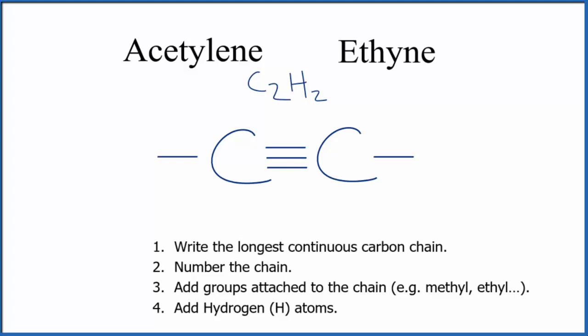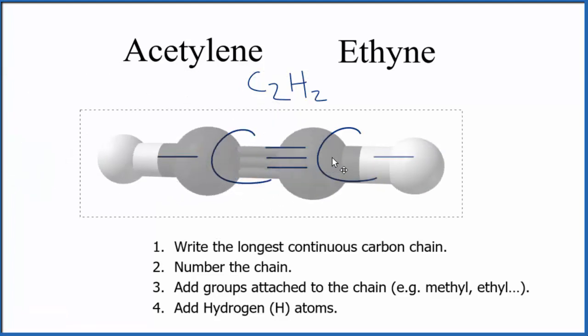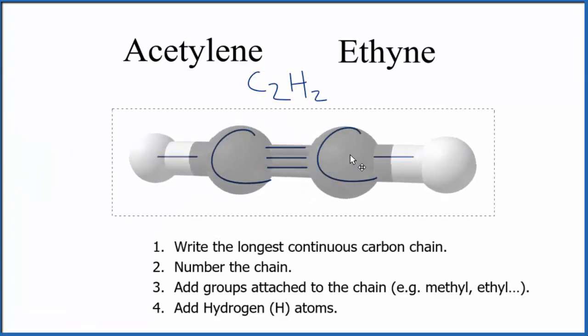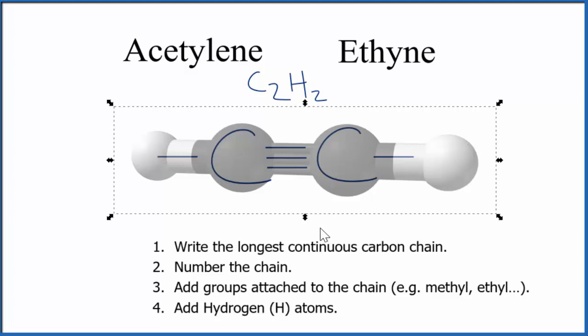If we look at a molecular model for acetylene, you can see that because of the triple bond, this is a linear molecule. Everything is in a straight line.